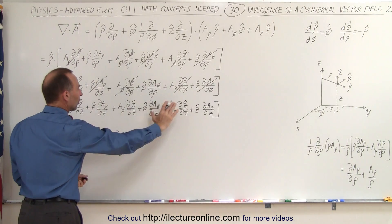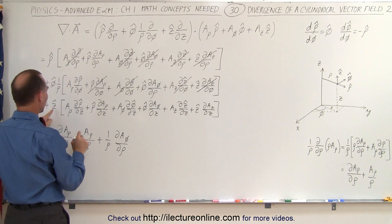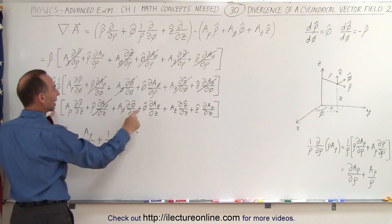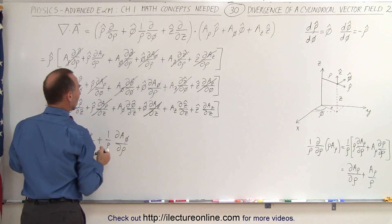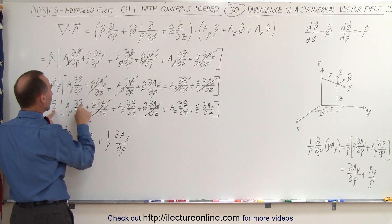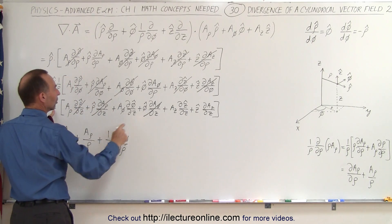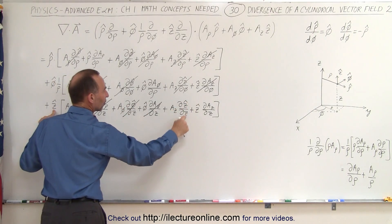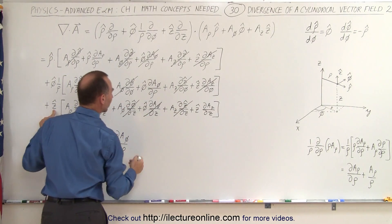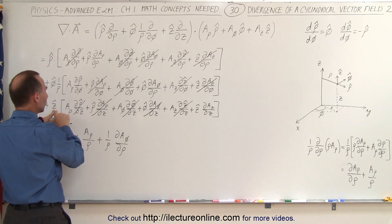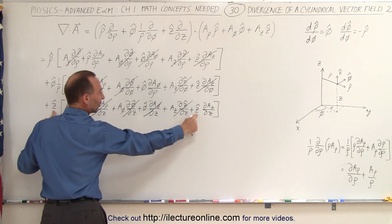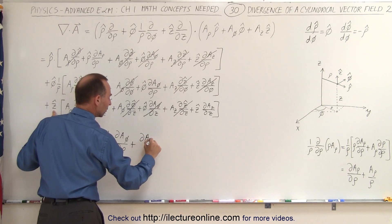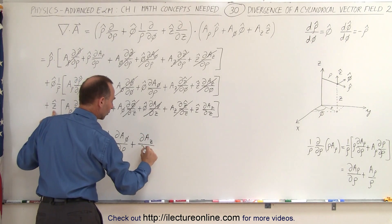Finally, coming down to the third part — the z direction. Multiplying z times rho gives zero; multiplying z times phi gives zero. The partial of the rho unit vector with respect to z is zero; the partial of the phi unit vector with respect to z is zero; and the partial of the z unit vector with respect to z is zero as well. The only surviving term is z-hat dot z-hat, which equals one, giving us plus the partial of a_z with respect to z.